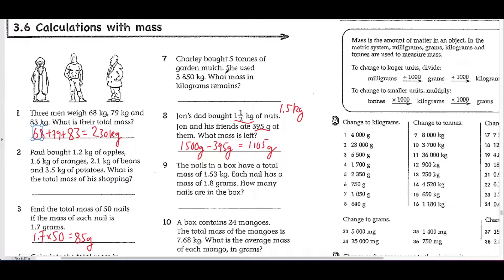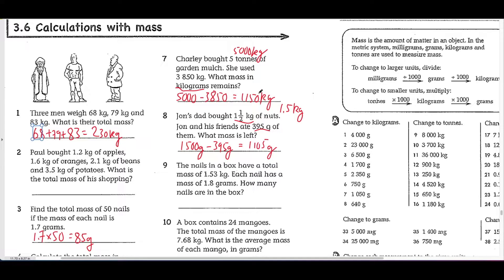Just be careful: you need to make sure you convert both units into the same one before doing these questions. Here's a similar question where the units differ. Charlie bought five tons of garden mulch and used 3,850 kilograms. What mass in kilograms remains? Because the question asks for kilograms, convert both units to kilograms. One ton equals 1,000 kilograms, so five tons is 5,000 kilograms. Then 5,000 minus 3,850 gives 1,150 kilograms. Make sure you write the units at the end.